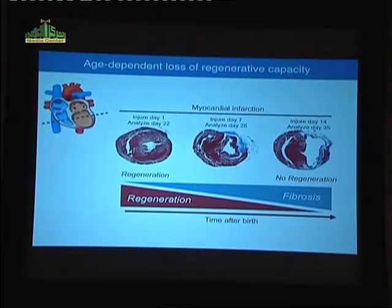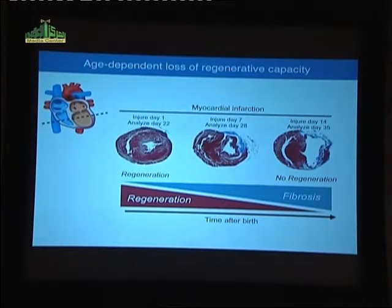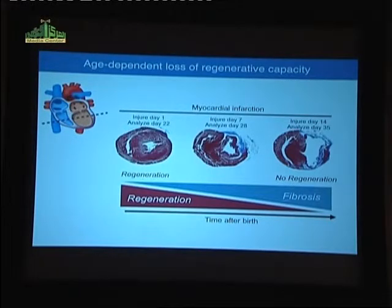If we allow these animals to go to 14 days or to adulthood, they exhibit the adult response to cardiac injury — there's no regeneration, and instead there's a massive formation of scar, a blockade to contractility, and dilation of the left ventricular chamber. From these experiments, we've concluded that the ability of the mammalian heart to regenerate is impeded by fibrosis, and the fibrotic response becomes more robust with time as the regenerative response declines.